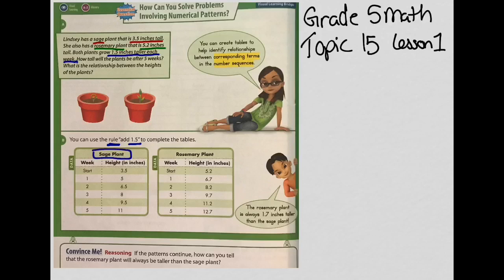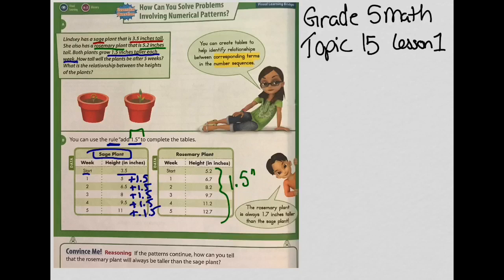Here's our sage plant. It started off at 3 and a half inches, then 1 and a half inches is added each week to get the number in that box, until we reach 5 weeks. The same thing happened for the rosemary plant — the rule is adding that 1 and a half inches each week, so from the previous week 1 and a half is added to each of those numbers.